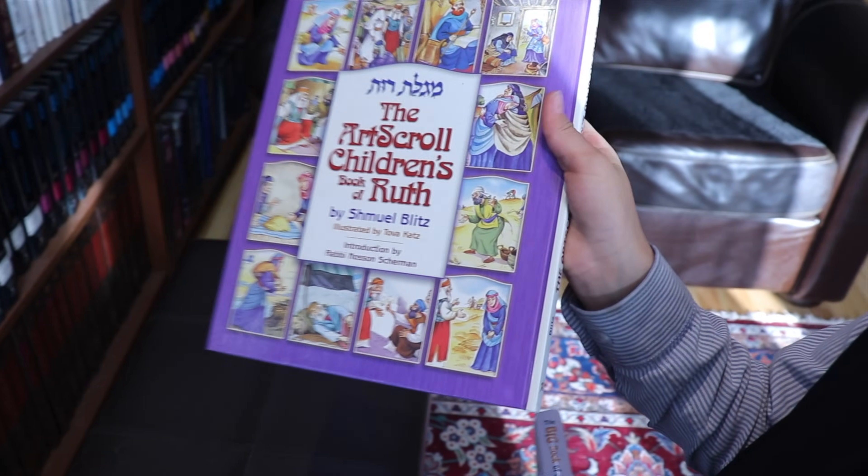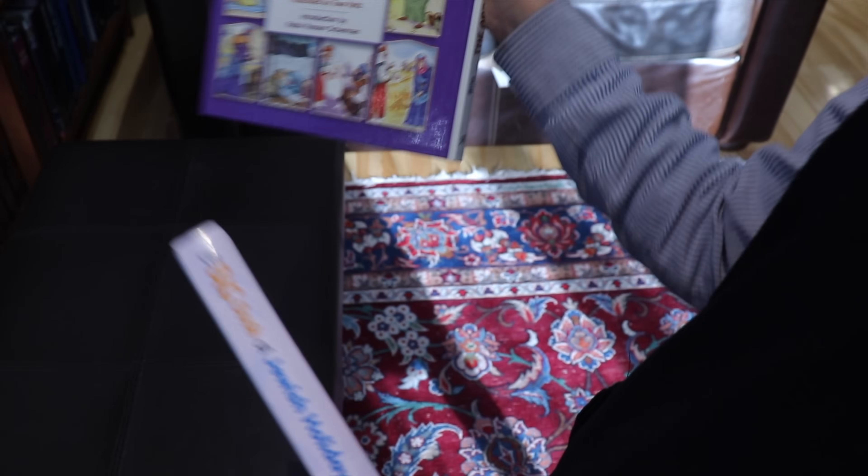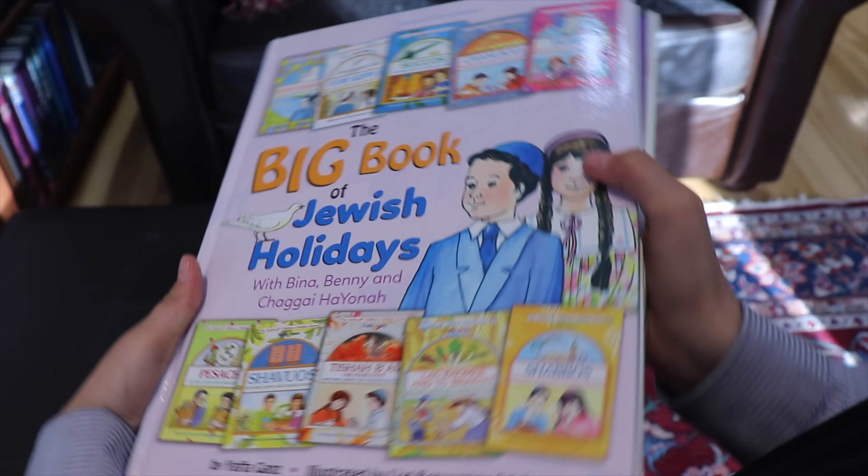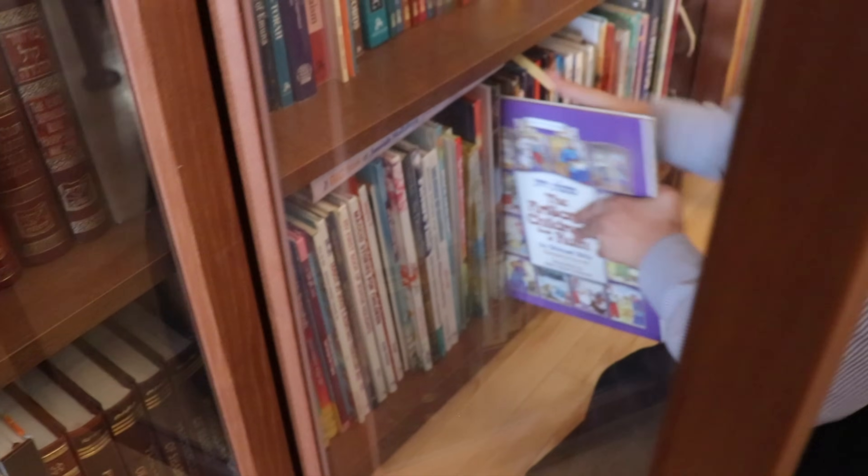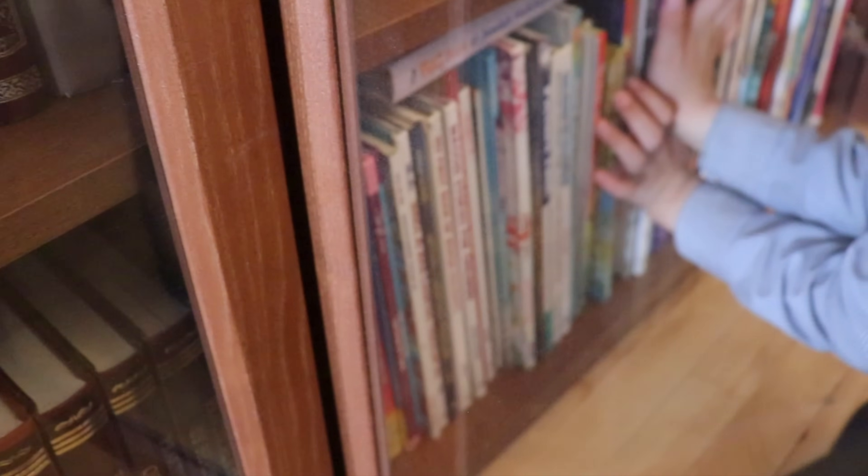The children will also clean up all the books they read on Shabbat and the holidays. Because as Orthodox Jews, we do not turn on or off electronic devices during Shabbat and the holidays, so their main source of entertainment are books, board games, and toys, and this is why we have so many, thank God. If you want to learn more about what kind of books we read as Orthodox Jews, I did a tour of an Orthodox Jewish bookstore, and I will leave the link in the description box below and above.